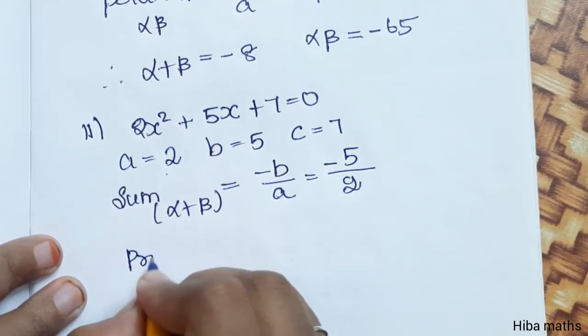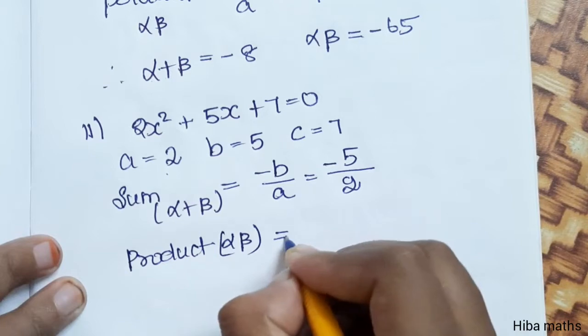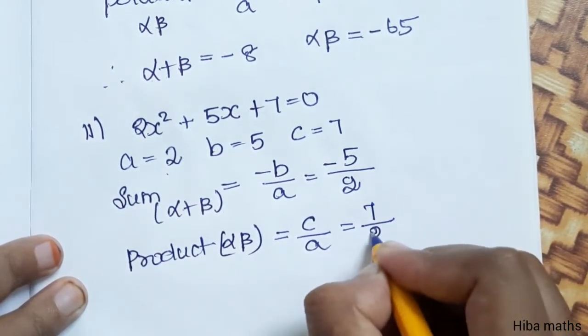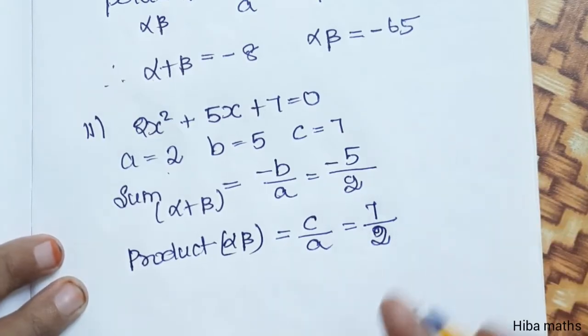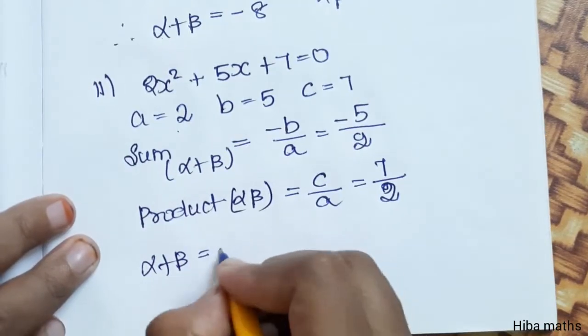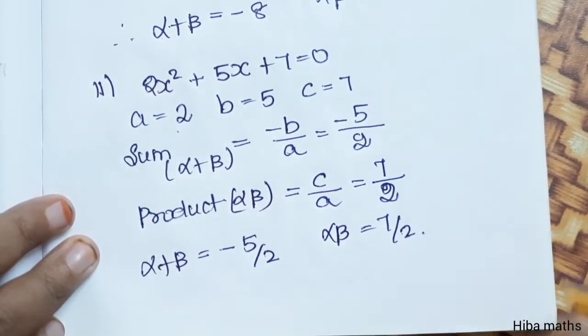Product, alpha into beta, is equal to c by a, that is 7 by 2. So alpha plus beta value is minus 5 by 2, and alpha into beta value is 7 by 2.